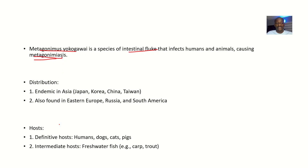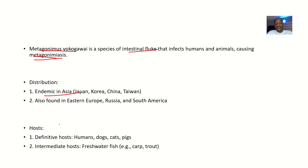The distribution of this organism — it is endemic, meaning it is on the rise in Asia, mostly in countries like Japan, Korea, China, and Taiwan. That's why the name Metagonimus yokogawai actually looks like a Japanese name. It is also found in Eastern Europe, Russia, and South America.